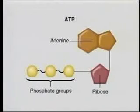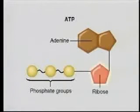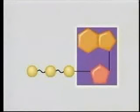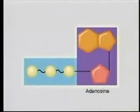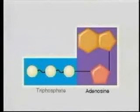Adenine is one of the bases found in DNA and RNA. Ribose is a sugar molecule found in RNA. The adenine and ribose portion of the ATP molecule is called adenosine. The three phosphates linked to the ribose in a chain are called triphosphate.